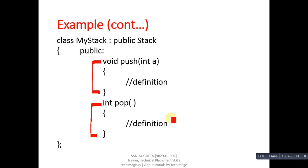If we implement a pure virtual function in the base class, then the base class works as a framework for derived classes. You follow the base class, and inside the derived class you have to implement all the definitions of the pure virtual functions. If we define any pure virtual function in a class, then that class will become an abstract class. So this is all about pure virtual functions.